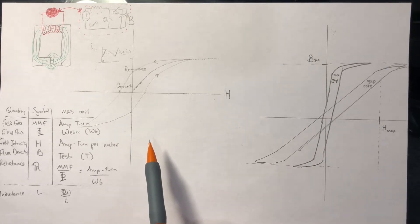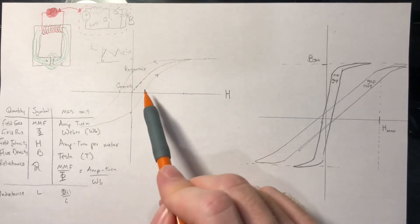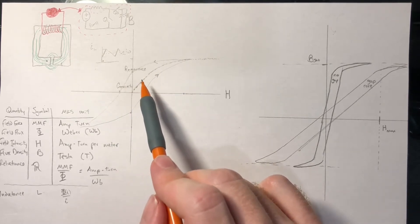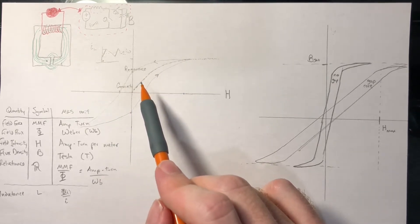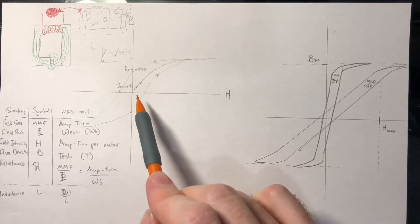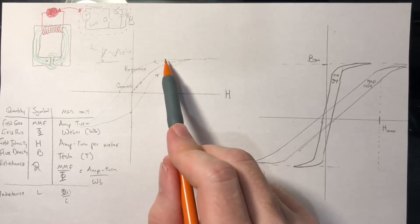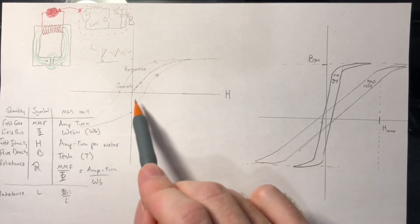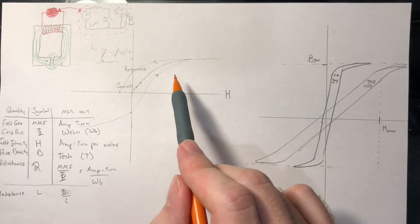For a transformer riding 50 or 60 hertz, the losses in here might be acceptable, but for power electronics applications up to 100 kilohertz, you would definitely want something with a really small area because you're going to be wasting energy every time you flip polarity through this hysteresis curve.